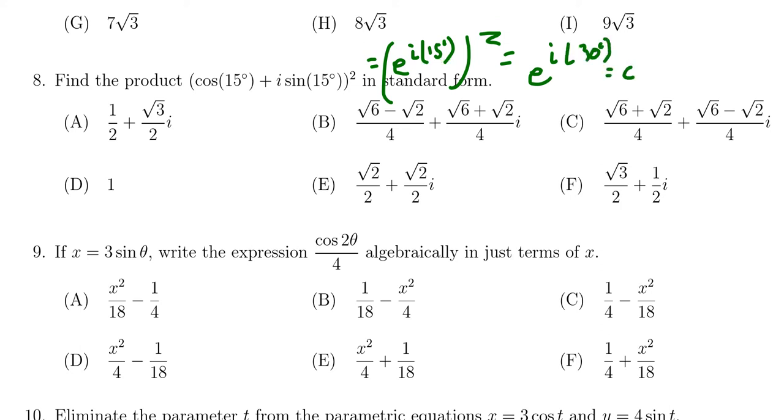Which is the same as cos(30°) + i sin(30°). Cosine of 30° is √3/2, and sine of 30° is 1/2, so we get √3/2 + i/2. Therefore, we would select choice F as our correct answer.